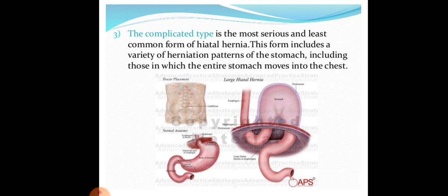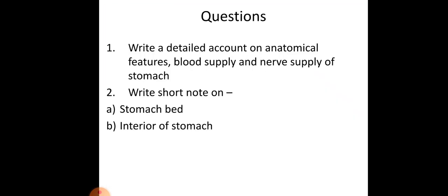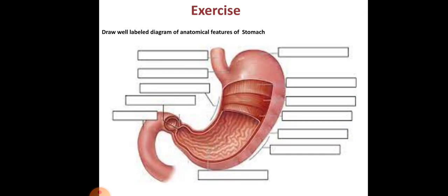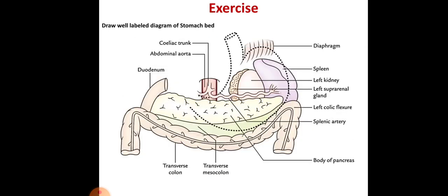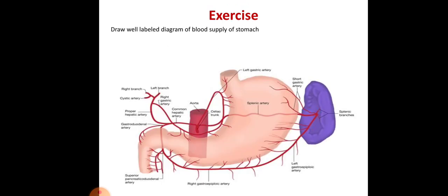The exam questions related to this topic are: write a detailed account on the anatomical features, blood supply, and nerve supply of the stomach; and write a short note on the stomach bed and the interior of the stomach — both require diagrams. For file exercises: draw and label the stomach diagram, draw the stomach bed diagram, and draw the blood supply of the stomach, as it can be asked as a short note in exams.